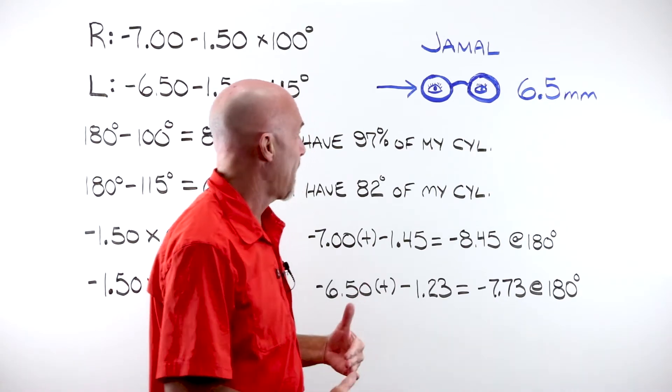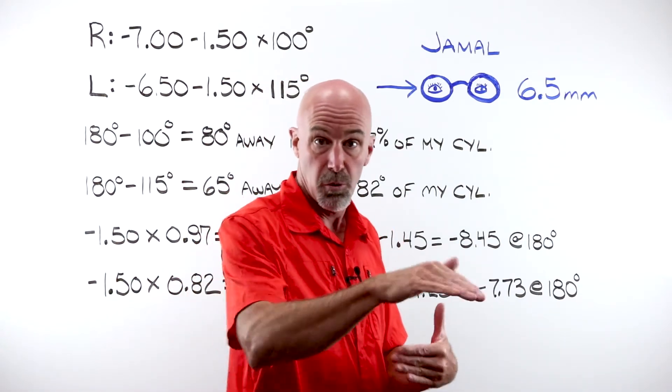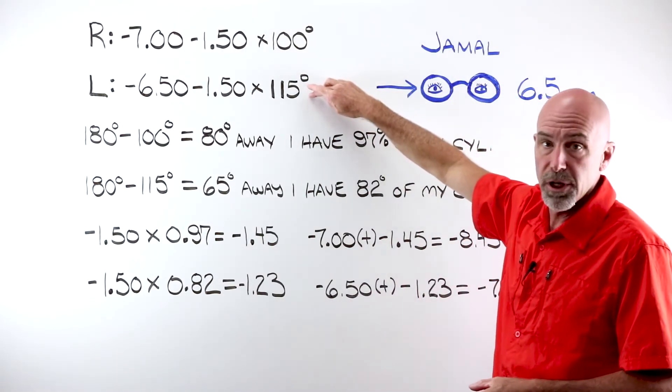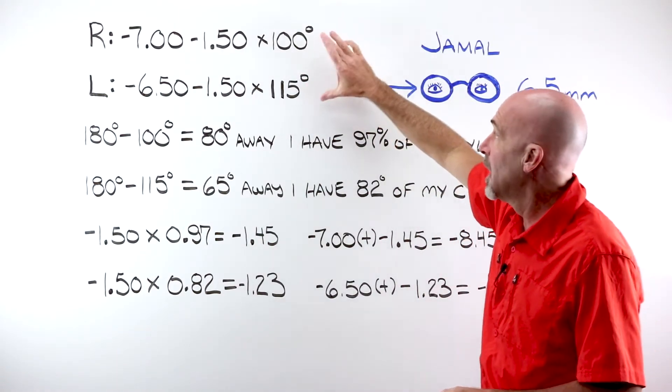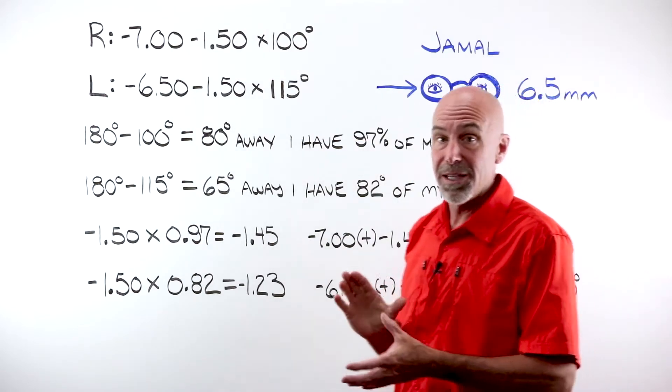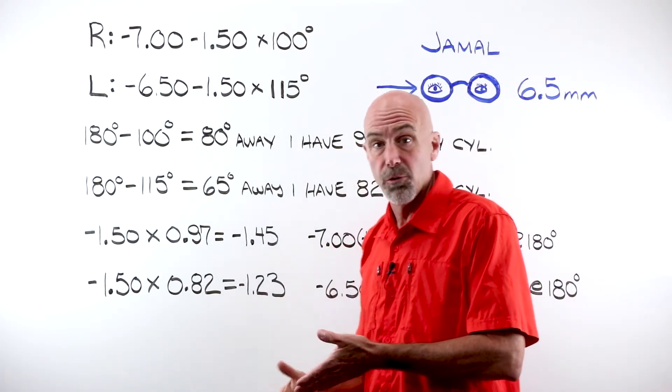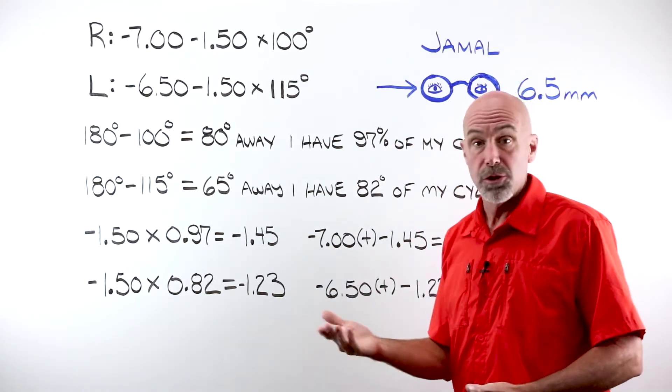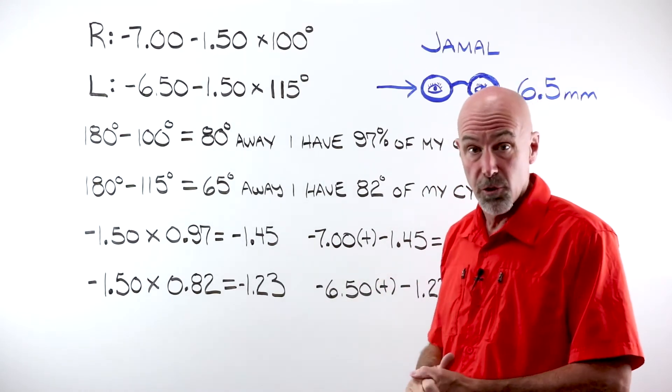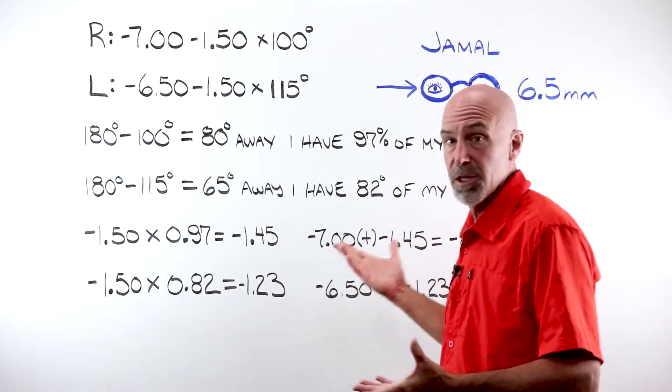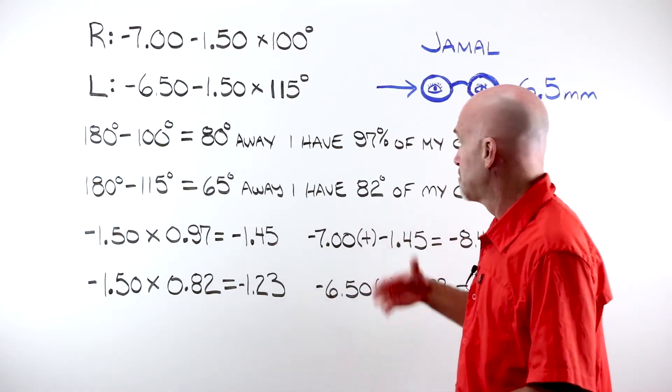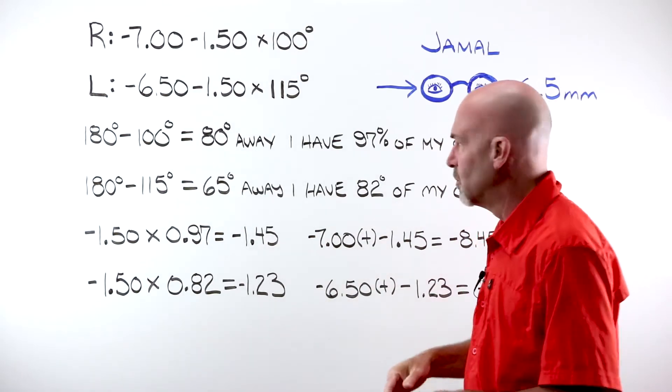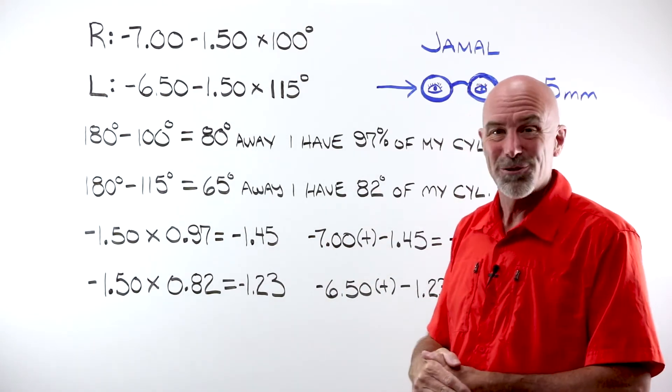So in order to solve this problem, I need the power at 180 degrees, the zero, 180. What I have is 100 and 115. Neither one of those fits nice and neatly into our 30, 45, 60 rule. I could use the powers in oblique meridians formula, but this is an ABO question, so we're gonna try to use the rule of thumb, or the percent rule, because it's a little bit faster and a little bit easier.